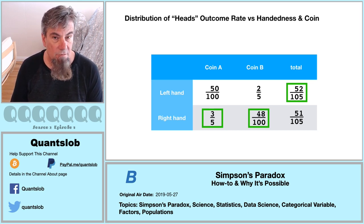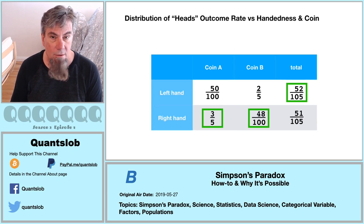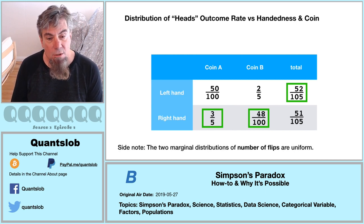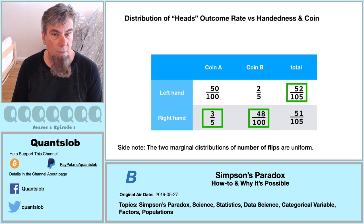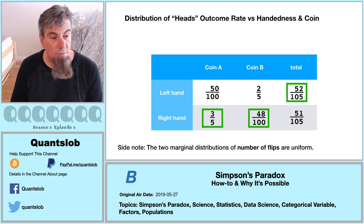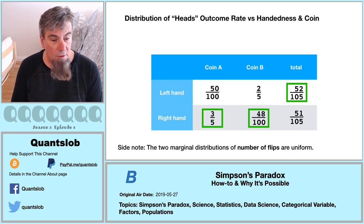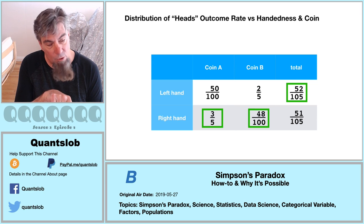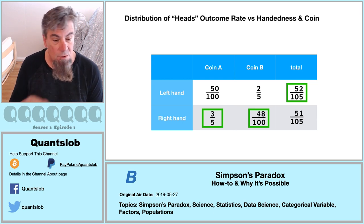Three-fifths is greater than 50 over 100, and 48 one-hundredths is greater than two-fifths. An interesting property of this particular simulation: the two marginal distributions are uniform. The number of left-hand flips is the same as right-hand flips — 105. And the number of flips of coin A is the same as coin B — both 105.